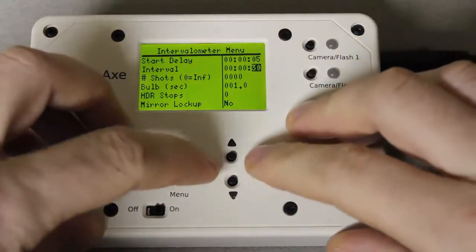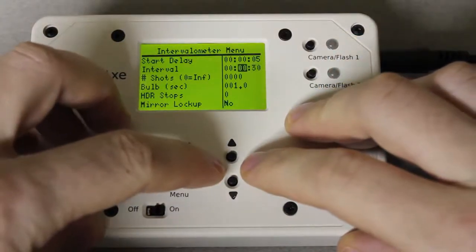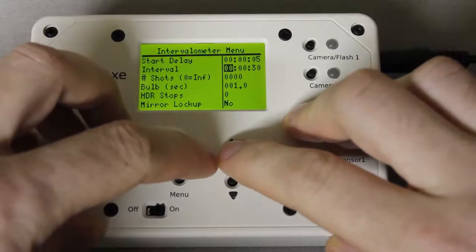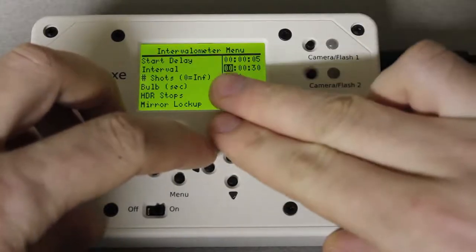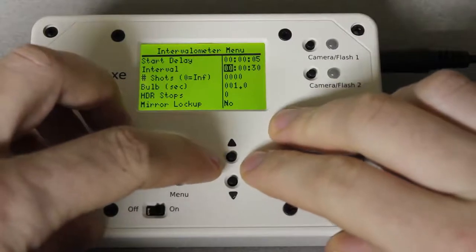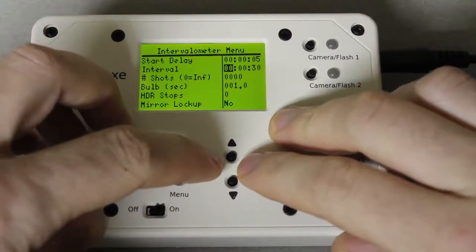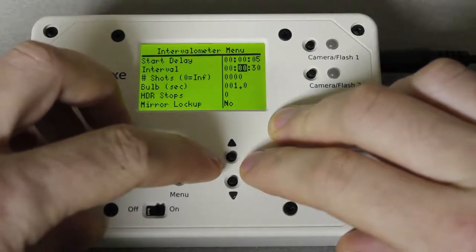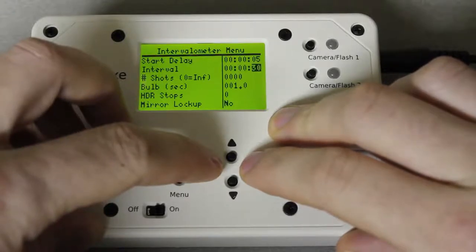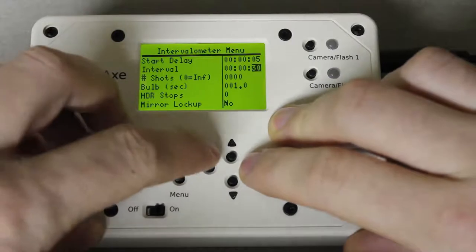For the interval, you set the times here. Both the start delay and the interval timer have the first two numbers represent hours and that can be from 0 to 99, and then you've got minutes which can be from 0 to 60, and then you've got seconds which can be from 0 to 60 as well.